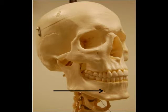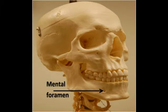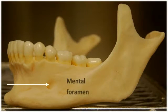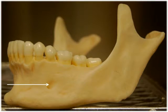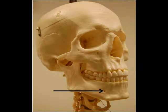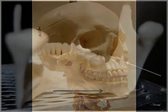There's a pair of foramina located on the mandible: the mental foramen and the mandibular foramen. The mental foramen is located on the chin in an area just under the second premolar tooth, and it allows passage of the mental nerve and associated blood vessels.